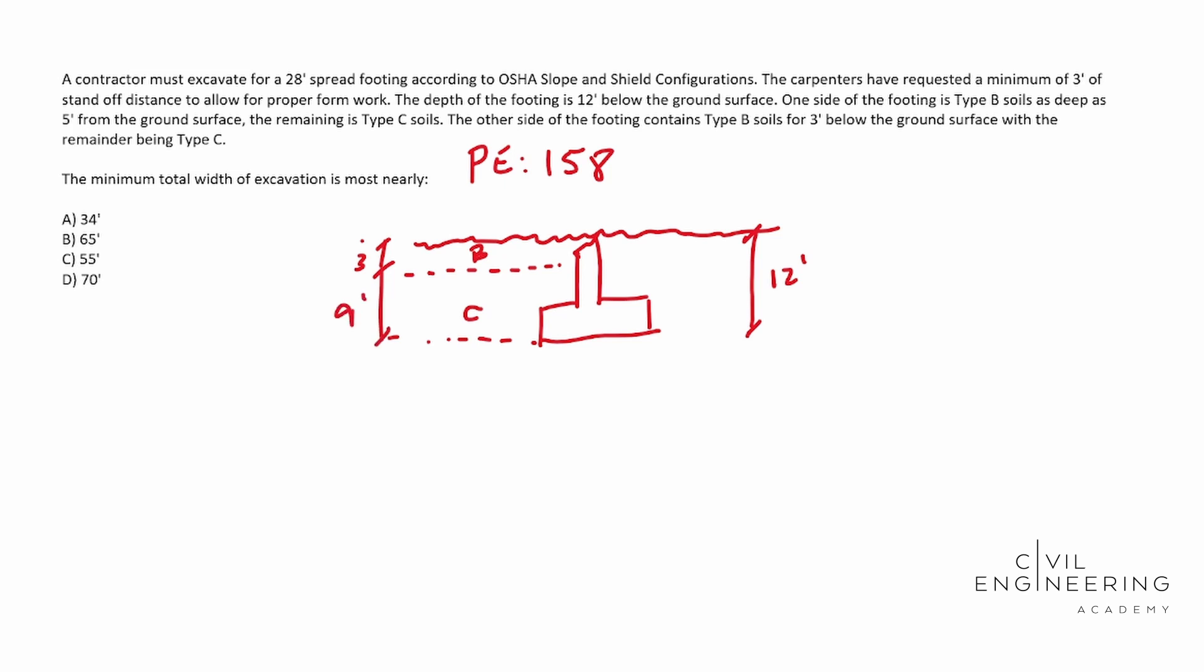On the other side, we're going to have something similar. We're going to have type B again on the top, but this is actually five feet of type B. And then the rest is going to be that type C, which is going to be seven feet. So that's kind of a sketch of what we're looking at.